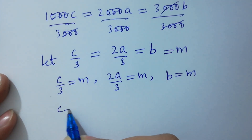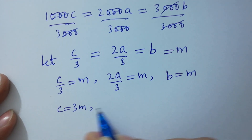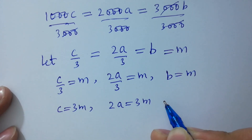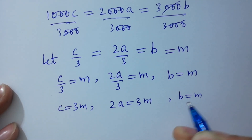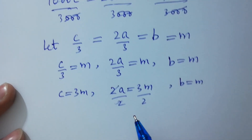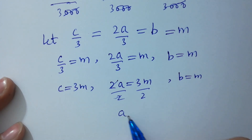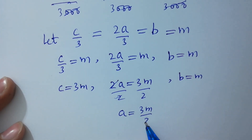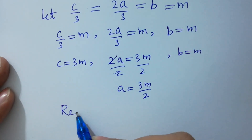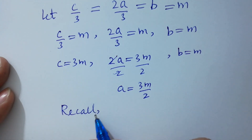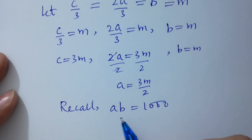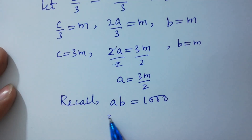Therefore, C equals 3M. And 2A equals 3M, so dividing both sides by 2, A equals 3M over 2. And B equals M as it is.